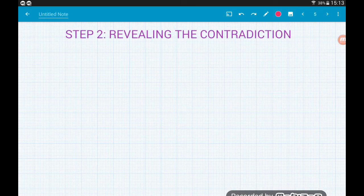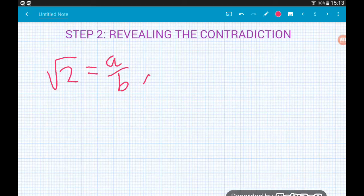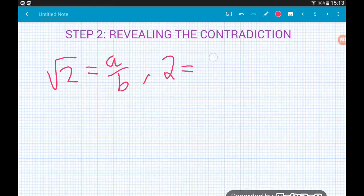Let's have a look then at what this means. So if we are in fact saying that root 2 is equal to a over b, then if we square both sides of this, that's going to tell us that 2 is equal to a squared divided by b squared.